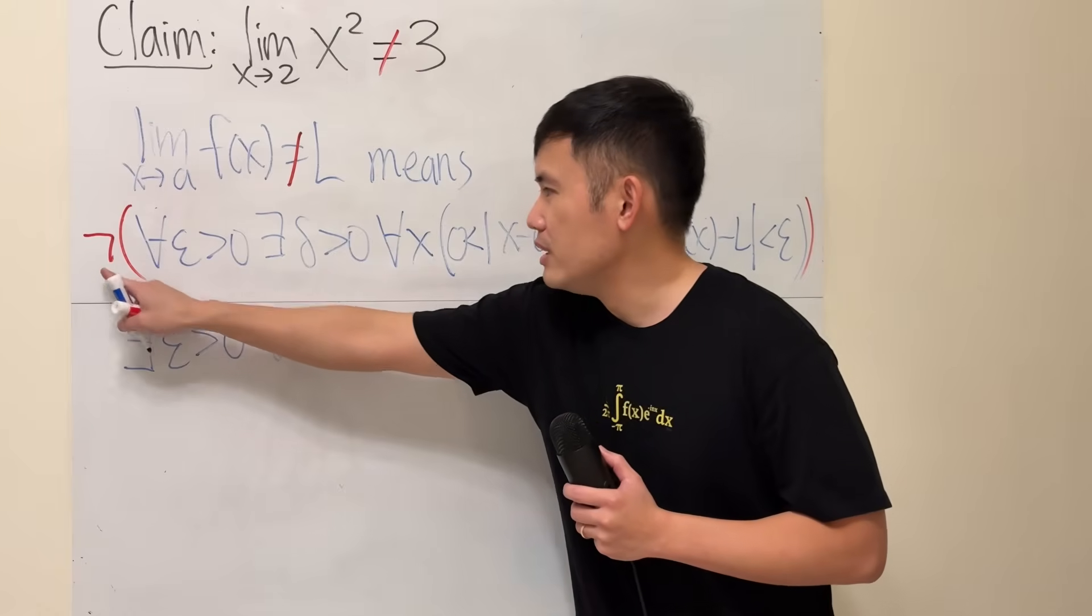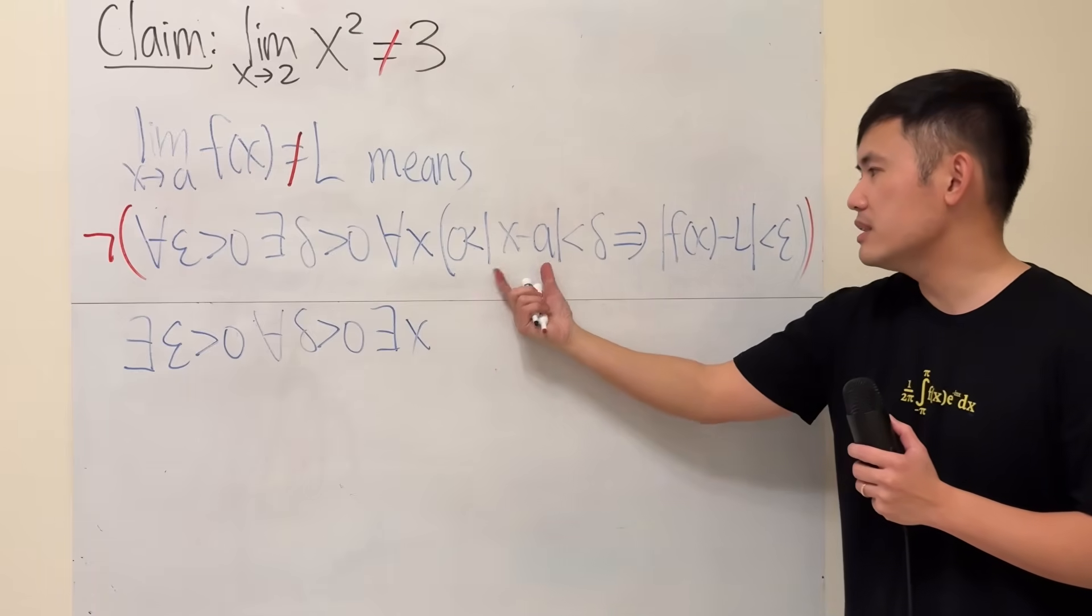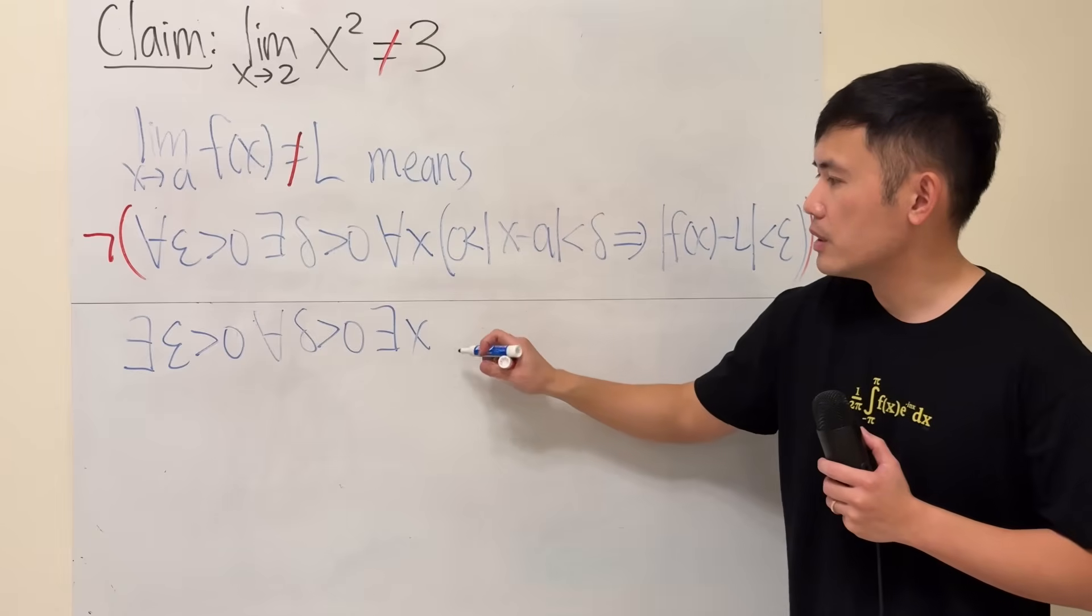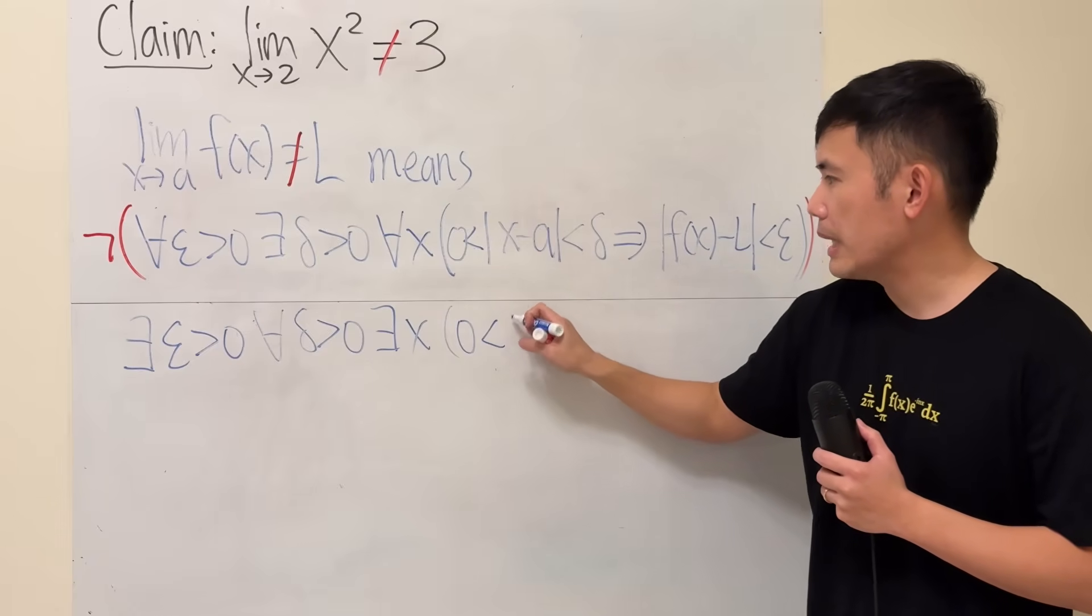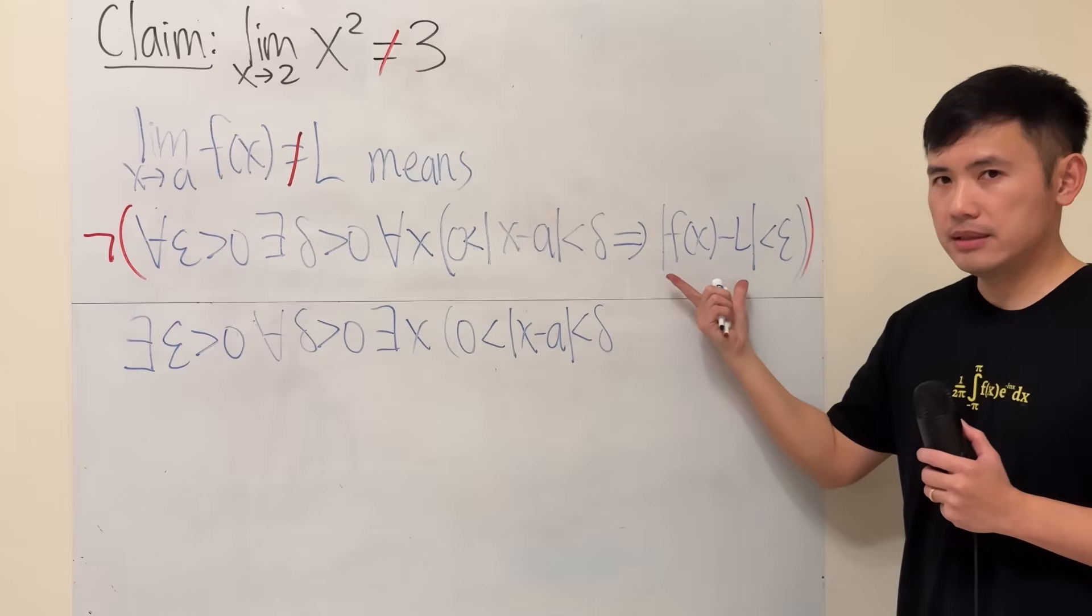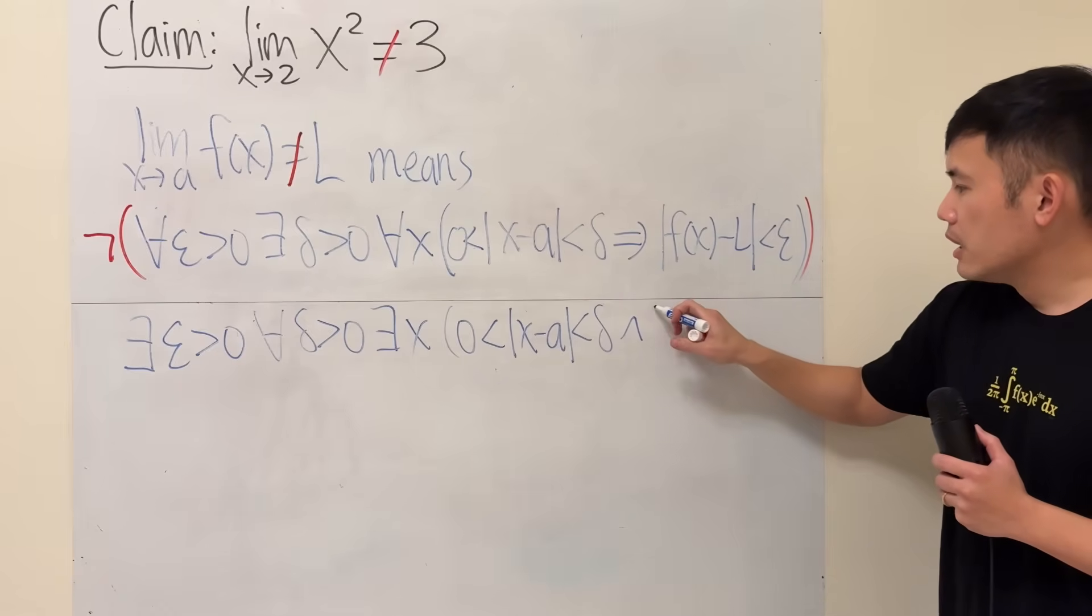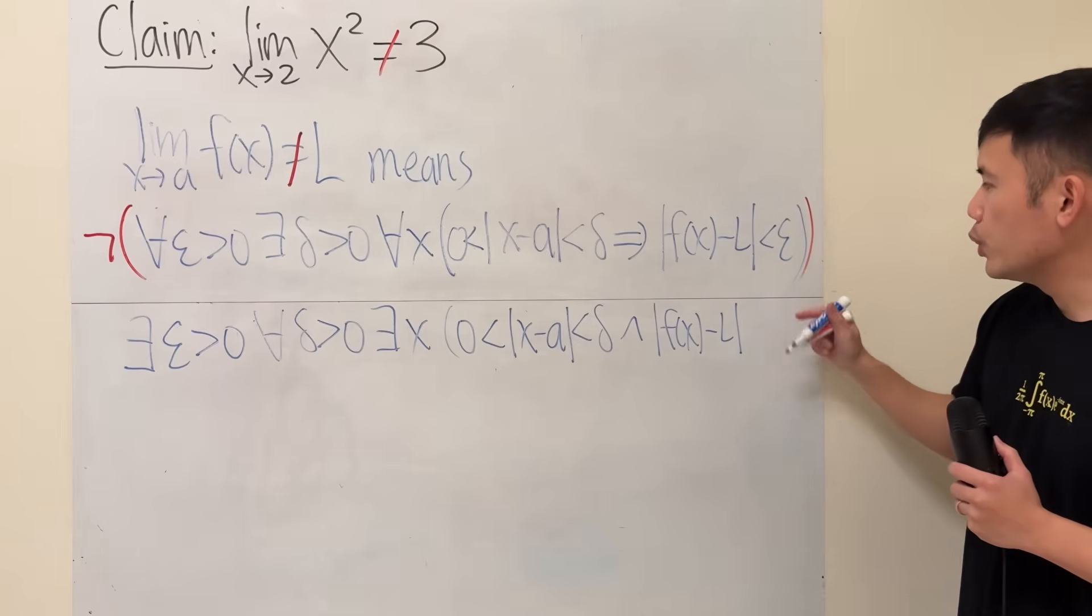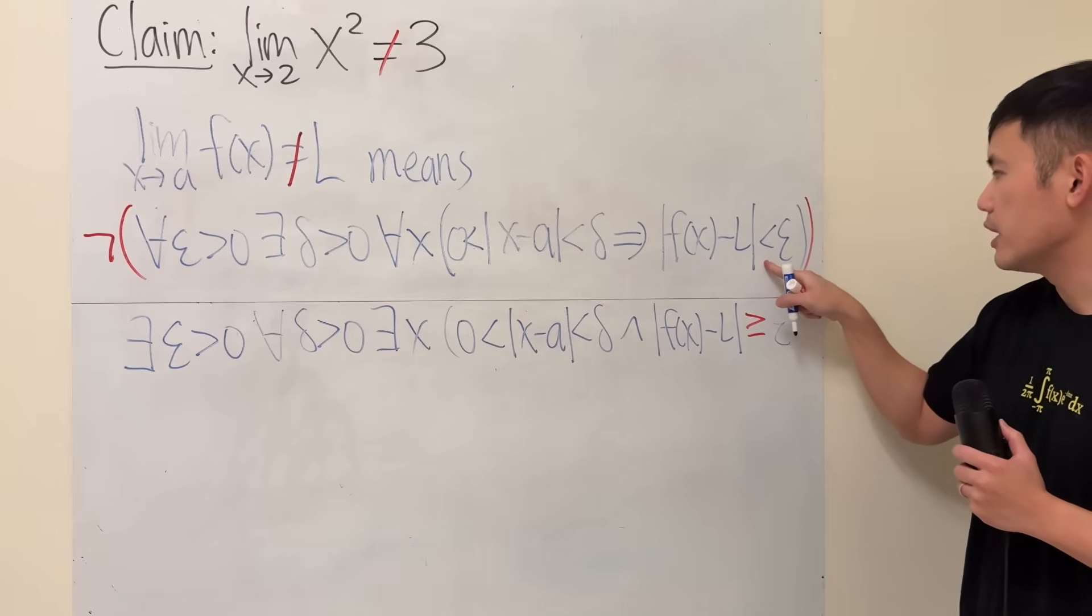Negating there exists, you get for all delta greater than zero. Now this part right here is crucial. You have to negate for all x. So you are going to get there exists x such that now we have this implying that how do we negate an implication? The answer is we keep this. So I'm going to say there exists an x so that we have this. So the absolute value of x minus a is in between of zero and delta. But we are not going to get this. This means and. And we are not going to get this. Meaning that the distance between the function and L is not less than epsilon. This is the part that we will have to negate the inequality. We have to say this right here is greater than or equal to epsilon.